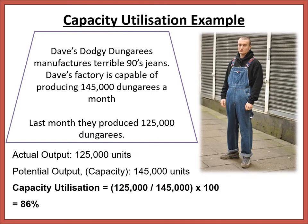Here's an example: Dodgy Dave's Dungarees manufactures 90s jeans. Dave's factory is capable of producing 145,000 dungarees a month, but last month they produced 125,000 dungarees. Using the formula: 125,000 divided by 145,000 times 100 equals 86%. I would usually round to the nearest percent, or if using decimals, just two decimal places maximum.